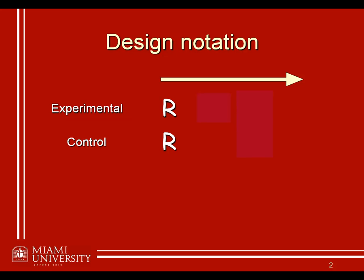Let's imagine we just have two specific groups — an experimental and a control group. In a true experiment, the first thing we want to do is randomly assign participants to one of these two different groups, and this is denoted by the R shown on screen. Moving from left to right across the screen — with the arrow at the top showing the progression of time — the first thing that happens is participants are randomly assigned to their condition, shown by R. Then the experimental group receives some sort of manipulation, indicated by X.